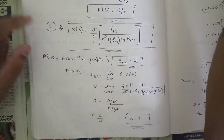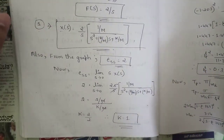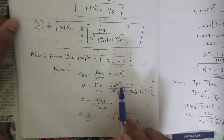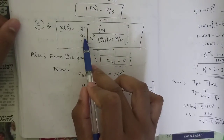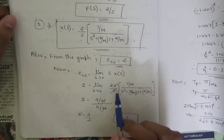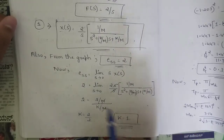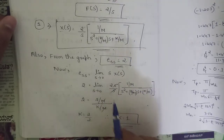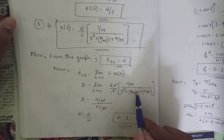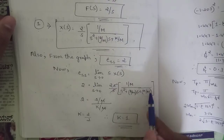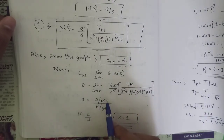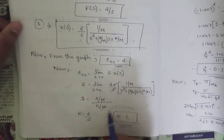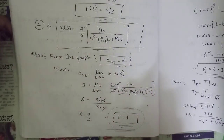Applying the formula: 2 = lim(s→0) s · (2/s) · (1/m)/(s² + (b/m)s + k/m). The s terms cancel, and applying the limit (s→0), we get 2 = (2/m)/(k/m) = 2/k. Therefore k = 1. This gives us the first value.